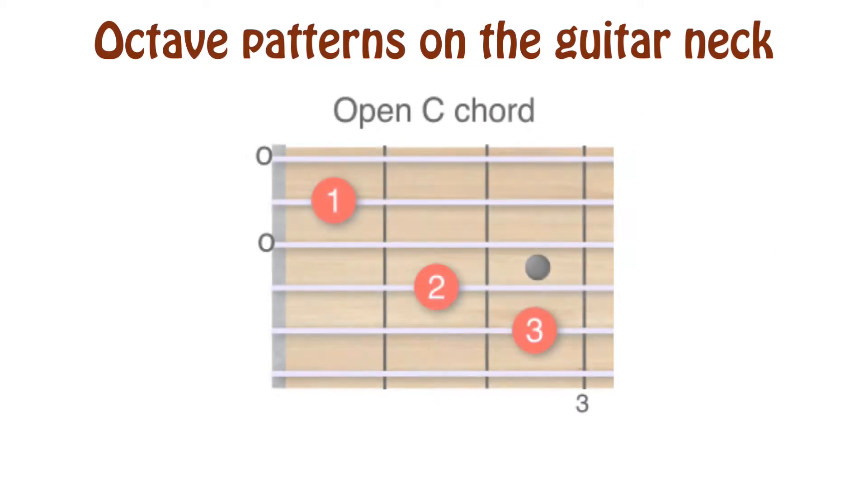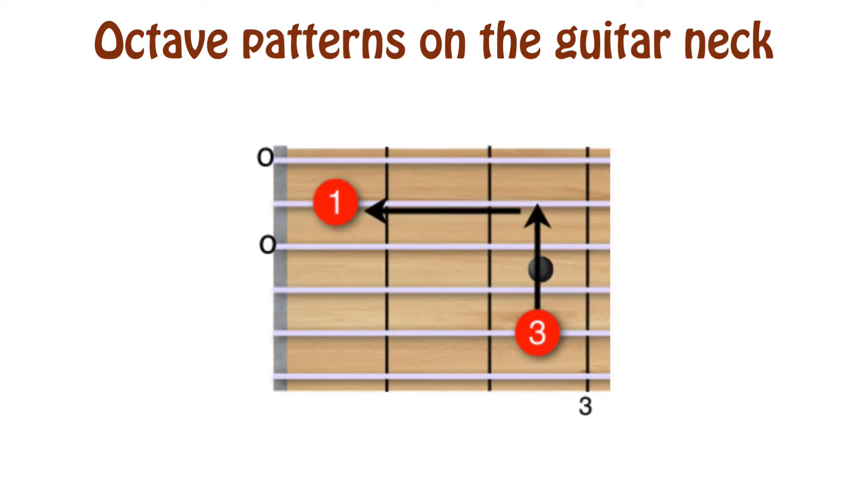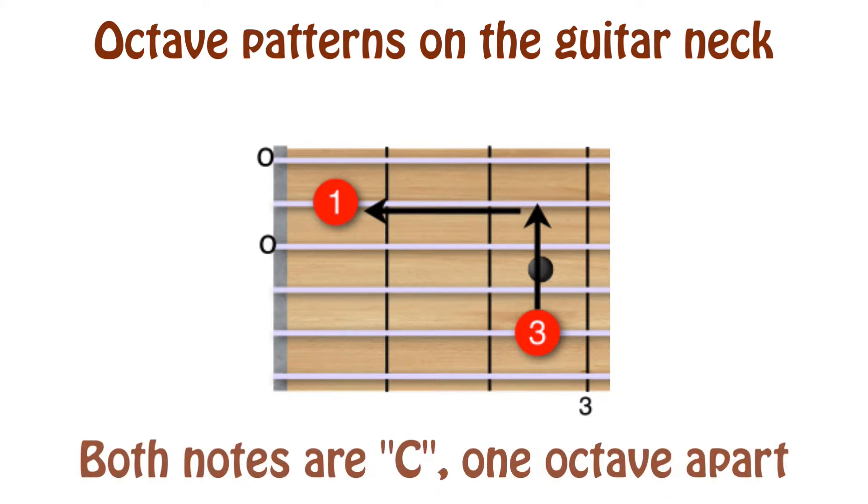Let's start with a basic C chord, one of the first open chords we all learn. The notes played by the first and third fingers are both C. Remember the relationship between those two notes on the neck.